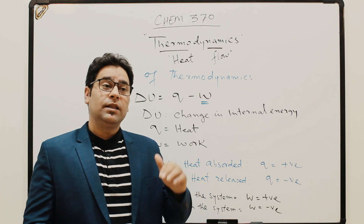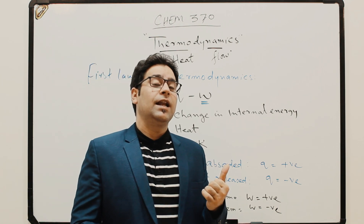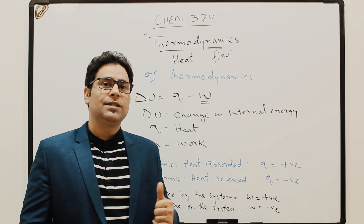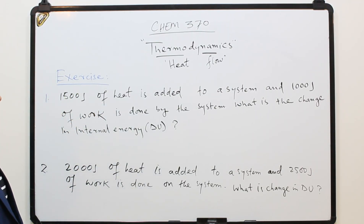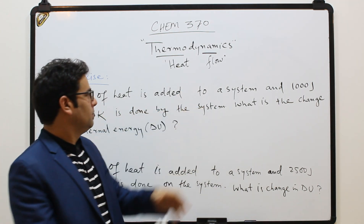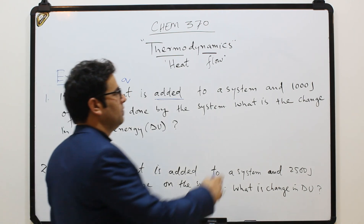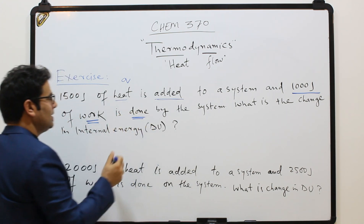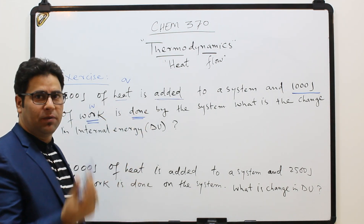Let me show you some practice problems. First exercise: 1500 joules of heat is added to a system, and 1000 joules of work is done by the system. Since heat is added, Q is positive. Since work is done by the system, W is positive.